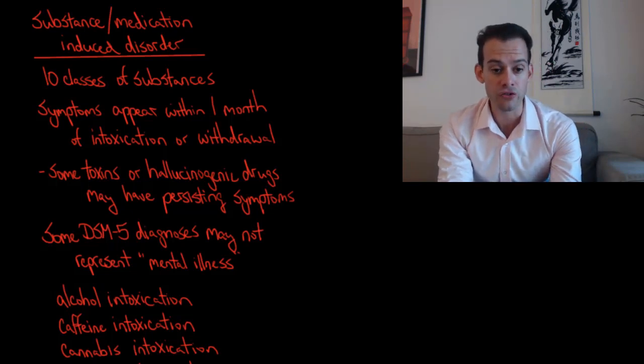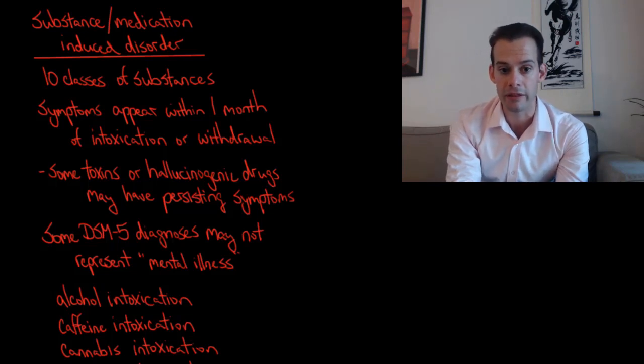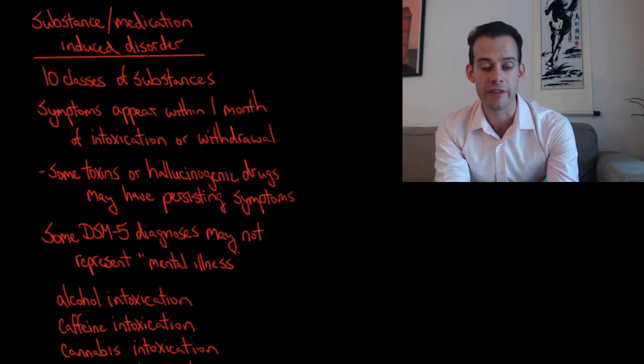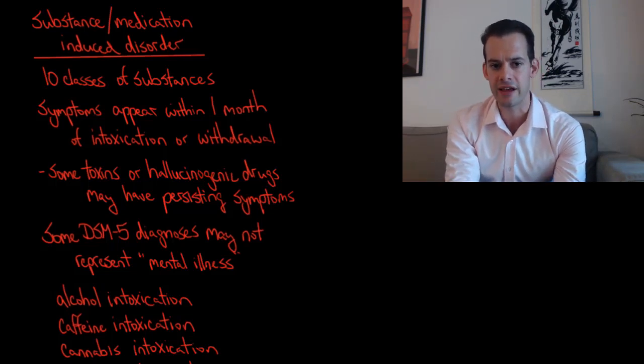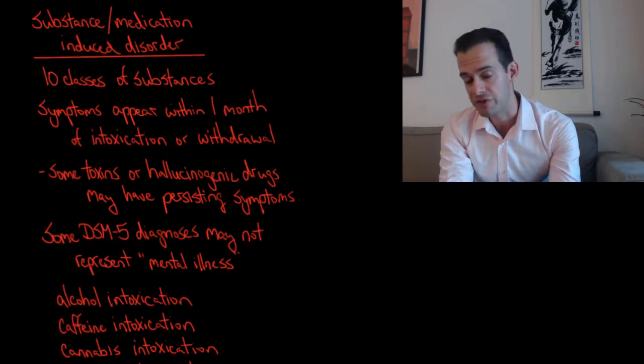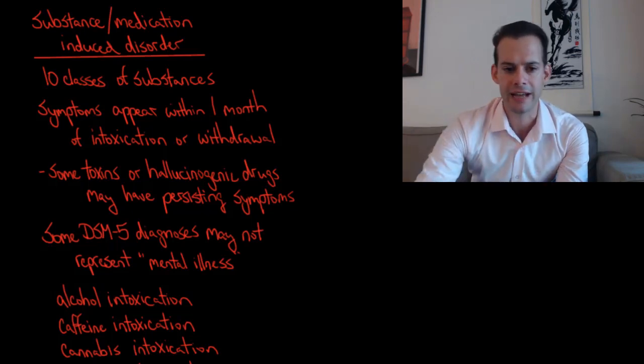Now, it's also true that some toxins or hallucinogenic drugs have effects that could last longer than one month after intoxication or after withdrawal, but that's generally the cutoff that's used. So what this means is that there are diagnoses that are in the DSM-5 that are not really what we would think of as mental illness, even though a person might have many of the symptoms that appear to be symptoms of mental illness.